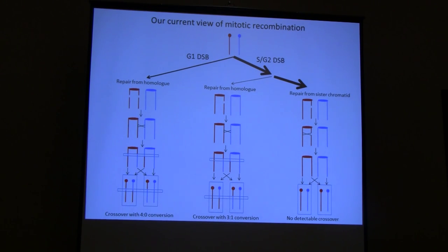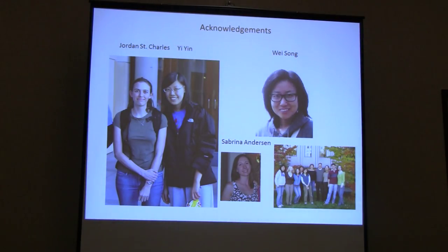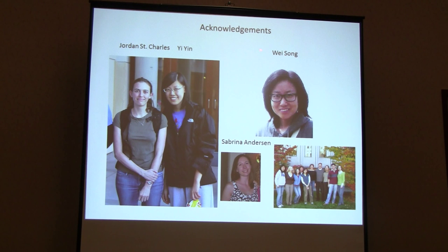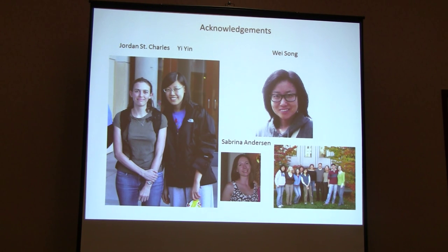I want to point out the people involved: Jordan did most of the work mapping spontaneous events, with some help from Yin in the analysis. Wei Song, who is here and has a poster on another subject, did the polymerase alpha experiments. Her poster will demonstrate that a diploid cell lacking the ability to undergo homologous recombination progressively loses chromosomes until it becomes haploid. These are the other members of my lab. I'll stop there and take questions. Thanks.